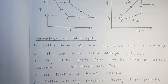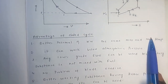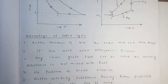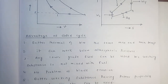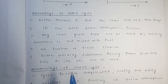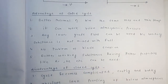To summarize the advantages of closed cycle: better thermal efficiency between same max and min temperatures; it can work below atmospheric pressure; lower grade fuel can be used since the working substance is not mixed with the fuel; no blade erosion problem; and we can use better working fluids like helium or argon, which improves thermal efficiency further.